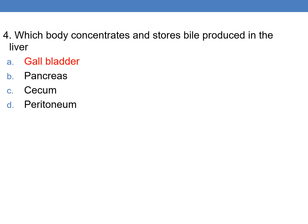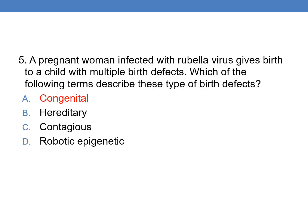Next question: which body concentrates and stores bile produced in the liver? Bile is produced in the liver but it is stored in the gallbladder. The gallbladder is the organ which stores bile.